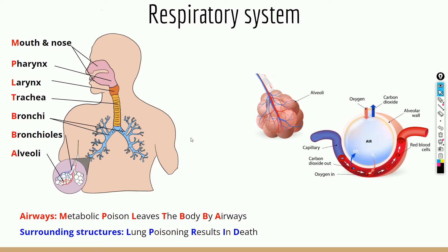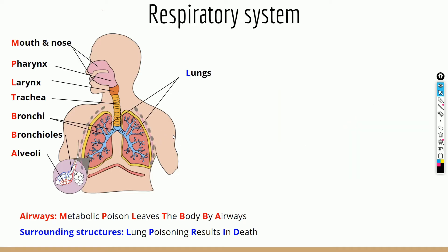Now for the surrounding structures. The acronym is 'Lung Poisoning Results In Death.' L stands for lungs, connected to each of the bronchi. P stands for the pleural membrane, which lines the lungs and contains pleural fluid. The function of the pleural fluid is to provide lubrication and reduce friction of the lungs as we breathe in and out.